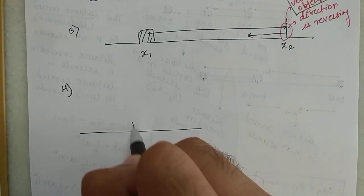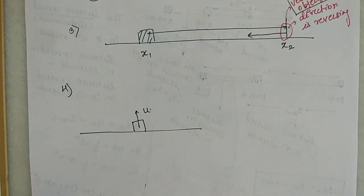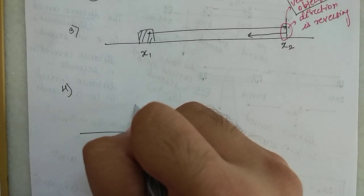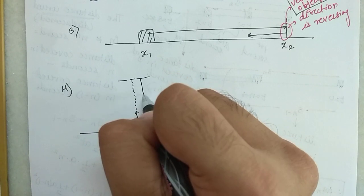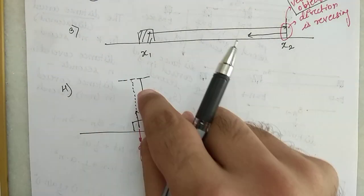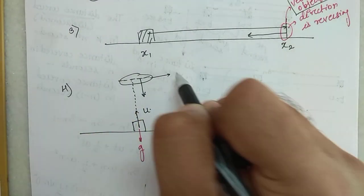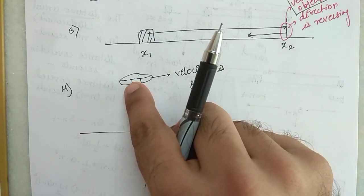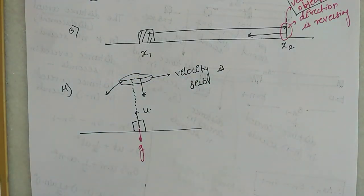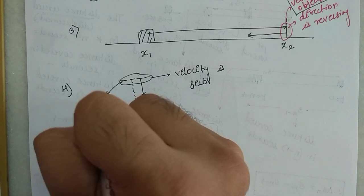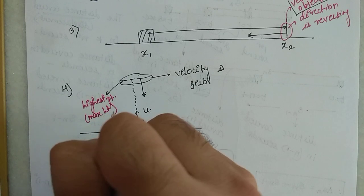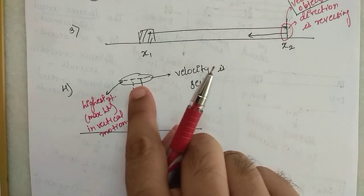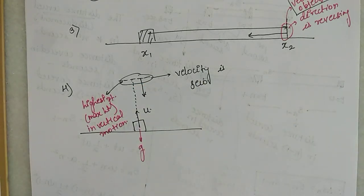This is also useful in vertical motion. If you throw an object upward with initial velocity u, gravity acts downward so the speed decreases. Eventually the object reaches a point where it reverses direction — that is the highest point. At that point, velocity is 0. So at maximum height in vertical motion, velocity is always equal to zero.